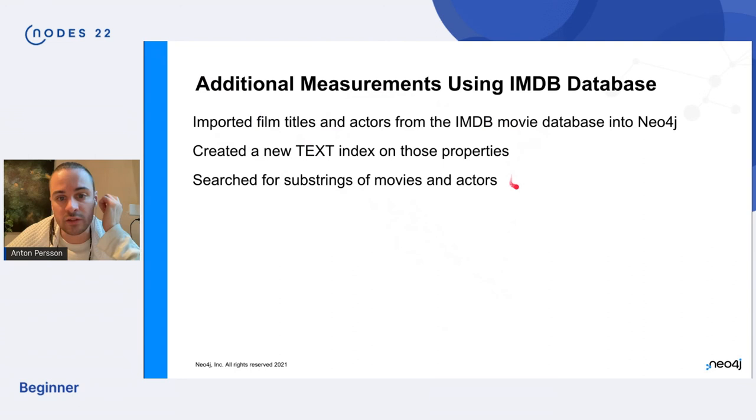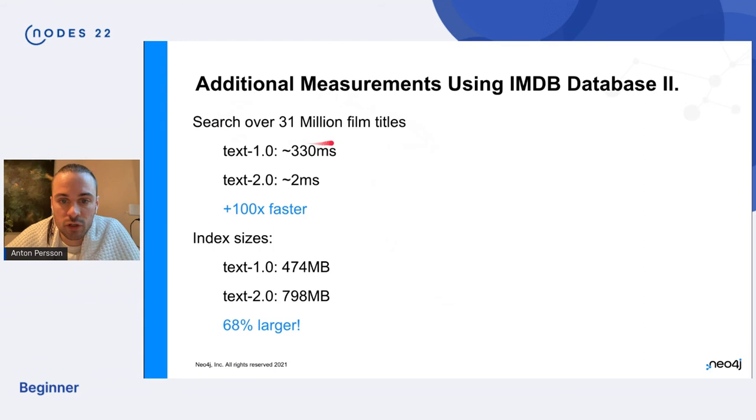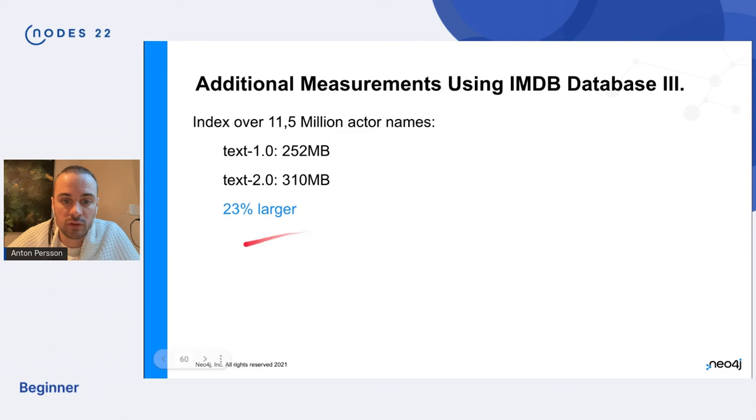But we wanted to explore some other more real data sets as well. So we took some, we imported some film titles and actors from the IMDB movie database and imported into Neo4j, created a text index, and we searched for some strings of movies and actors. And searching for among 31 million movies, the performance is kind of similar. We're down in the one digit. So like plus hundred X faster, but the index is actually 68% larger. So there is some trade up here to be aware about. And for the actors part, the index is 23% larger. So there are some examples and you'll need to try it out on your workload on your store to get the exact values, but here are some ballpark numbers.